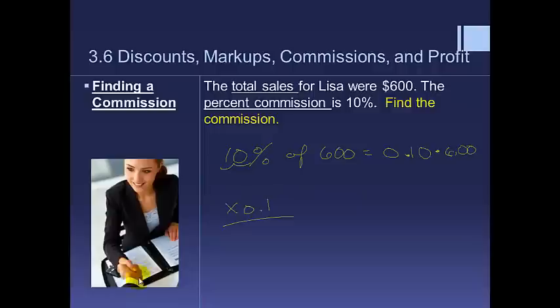So one times zero is zero, one times zero is zero, one times six is six. I have one number behind the decimal place so I go back one. So her commission is going to be sixty dollars. Okay, now you're not adding that to anything because the sale price or her sales is something separate, but she's going to get an extra sixty dollars income just for her. So she could be making hourly wage or she could just be making commission for that day, it really depends.